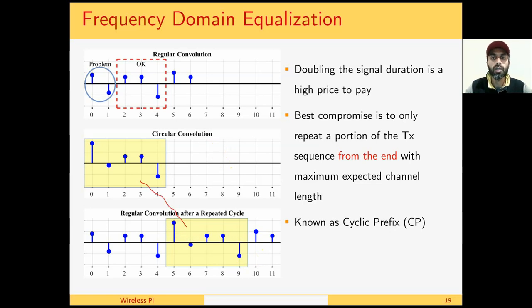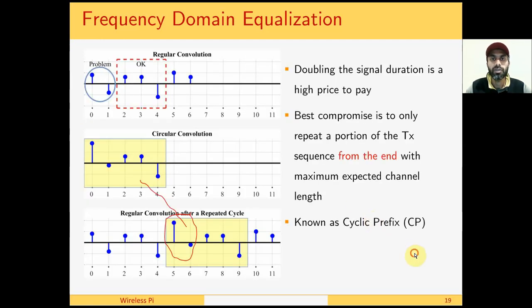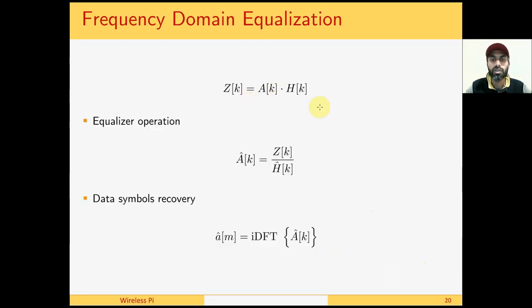However doubling the signal duration is a high price to pay. Therefore knowing that the difference in length is only given by the channel length itself, the best compromise is to only repeat a portion of the transmit sequence from the end with the maximum expected channel length. This is known as a cyclic prefix. Therefore in a cyclic prefix we take a few samples in the end and prepend them at the start. Then we can write this equation.